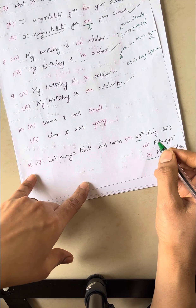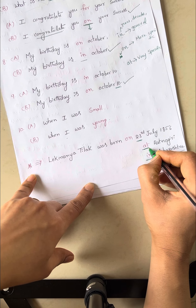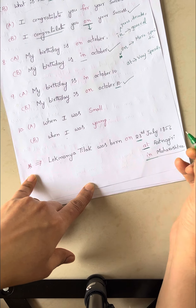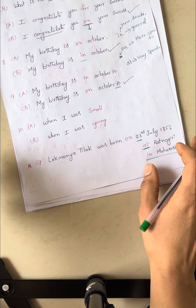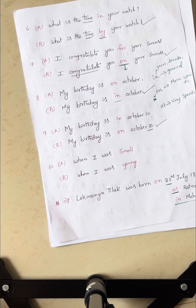In which place was he born? At Ratnagiri — he was born at Ratnagiri. You can use at for a very specific location.